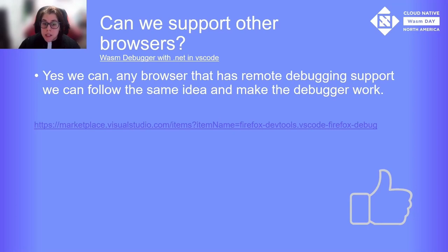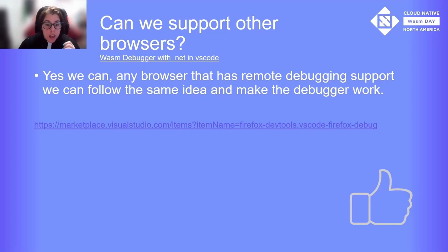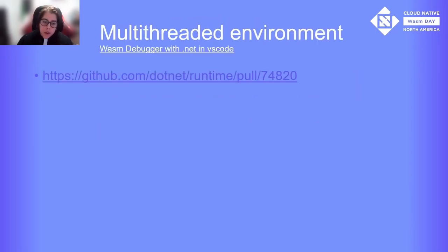A question you might be asking: is it possible to support debugging in other browsers? The answer is yes — we can follow the same idea to support debugging in any other browser that has a remote debugging feature. We already have experimental support for Firefox, and this is the extension we use when we want to debug from VS Code. Also as a curiosity, recently our runtime is supporting multi-thread and we had to change some things to make the debugger work. If anyone wants, they can look at this PR — it's not merged yet, but I hope it will be merged soon.